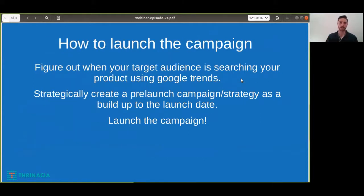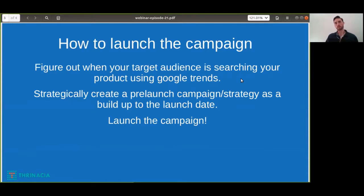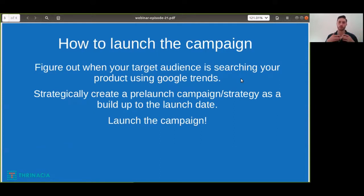Now, how to launch the campaign — specifically when to launch it. You want to figure out when your target audience is searching for your product using Google Trends. If it's a new invention, there might not be a search for that specific product, but use similar products in Google Trends so you can see when they're searching for it the most. Then you can strategically create a pre-launch campaign strategy as a build-up to the launch date.